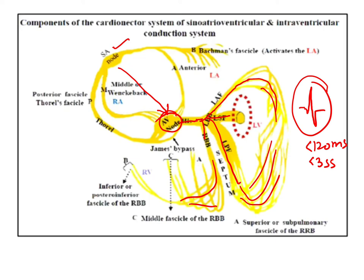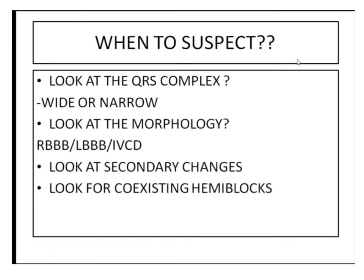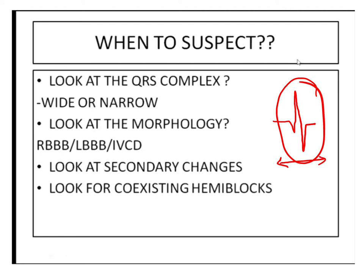Coming to the bundle branch blocks — as we know, ventricular activity is represented by the QRS complexes. To look for bundle branch blocks, we should always look at the QRS complexes, their morphology, and other secondary changes. Whenever we get a bundle branch block, the QRS complexes will be wide — usually more than 120 milliseconds.